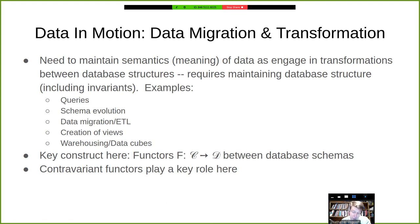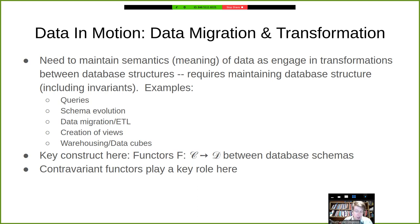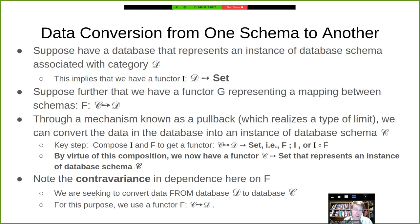The key construct here turns out to be functors as well — structure-preserving mappings from objects to objects and morphisms to morphisms. It turns out that this variant called contravariant functors also plays a big role here. We're going to see a cameo appearance by a contravariant functor. So we're going to talk about data conversion from one schema to another.